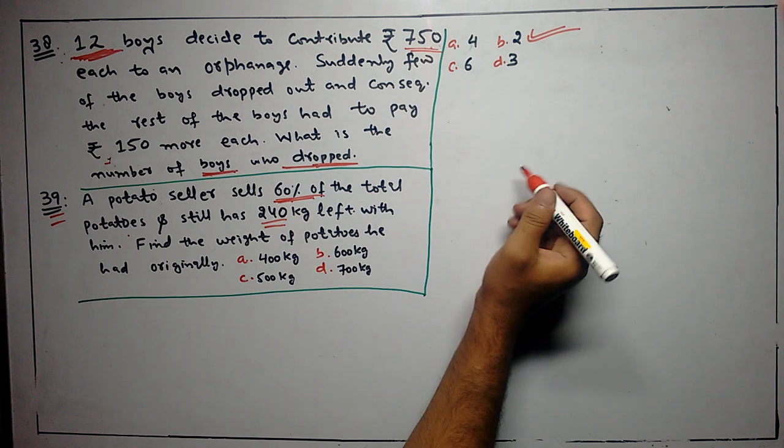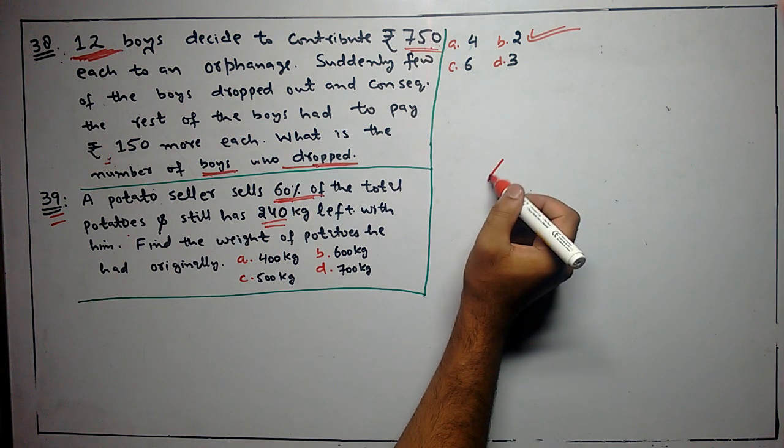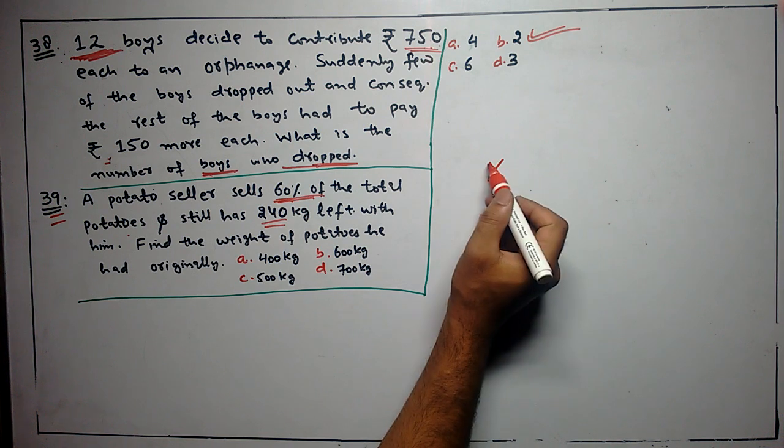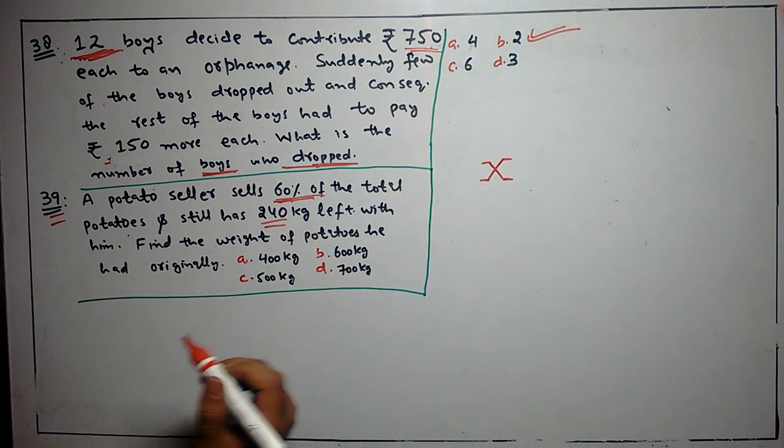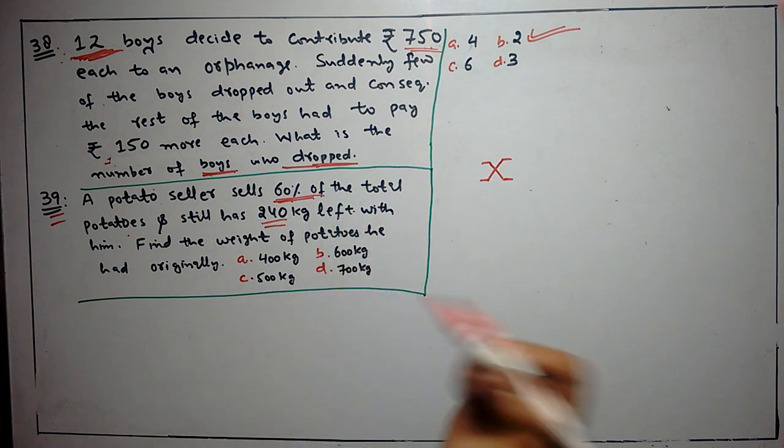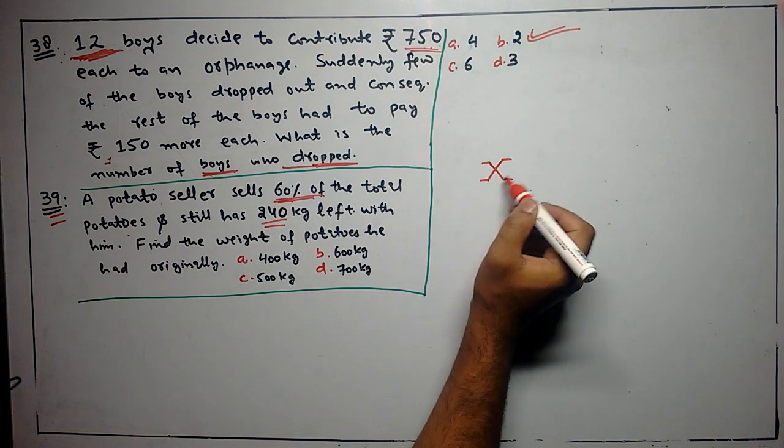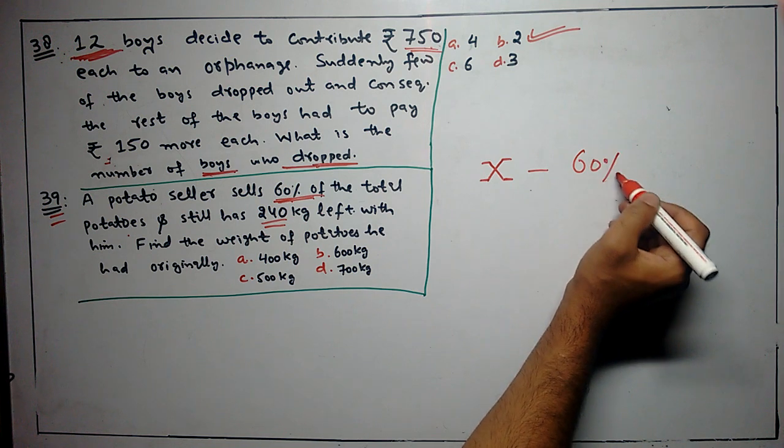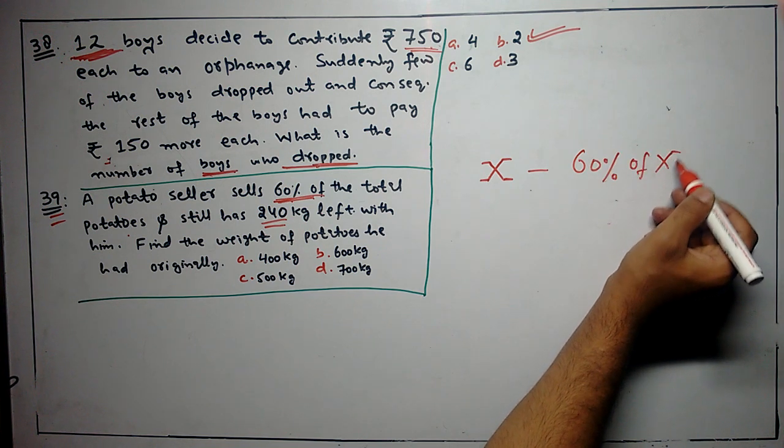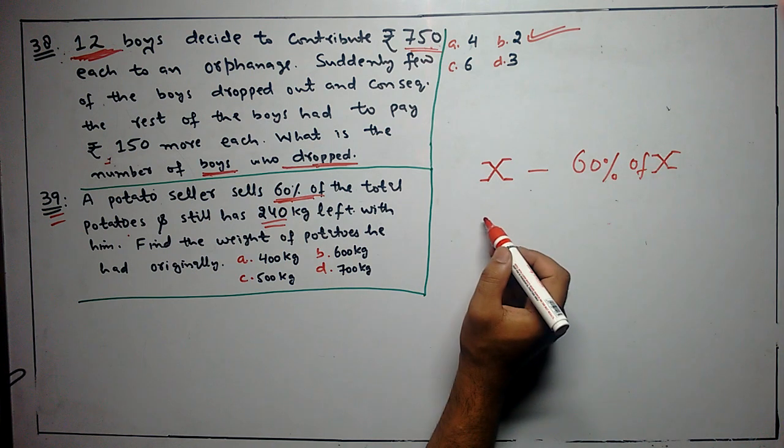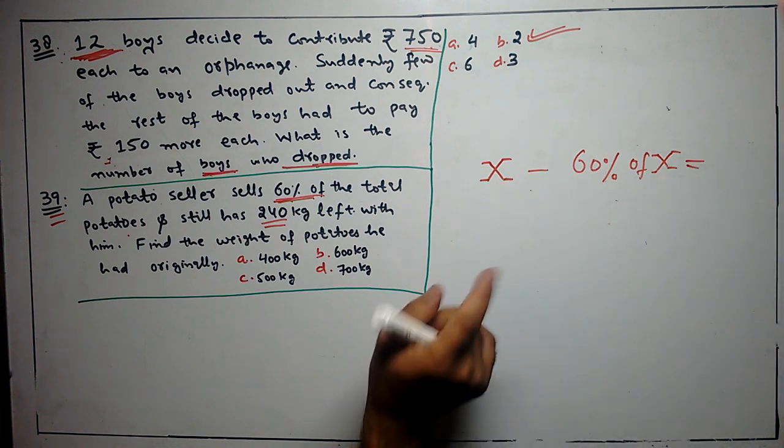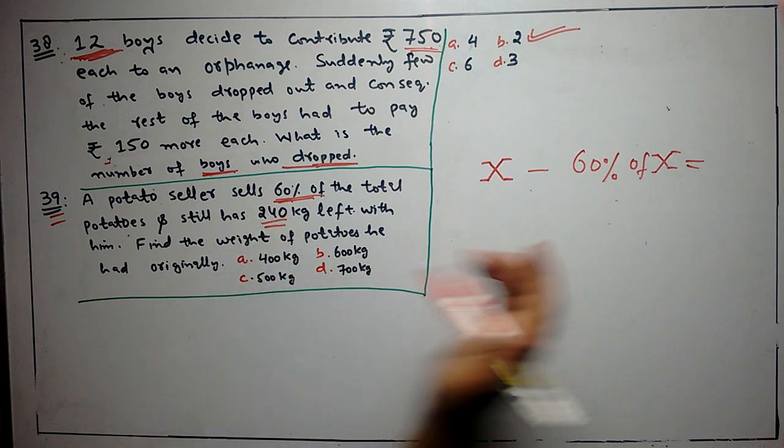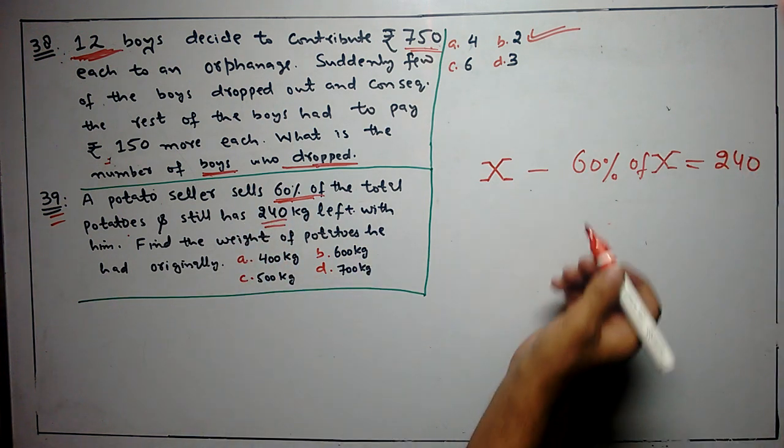First of all, we will assume the total amount of potatoes was x kg. In x kg, he sold 60% of the total potatoes. That means x minus 60% of x will be 240 kg.